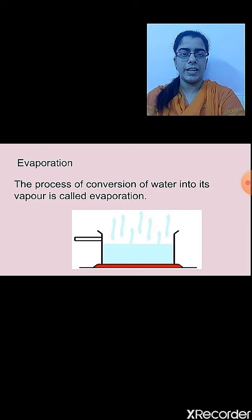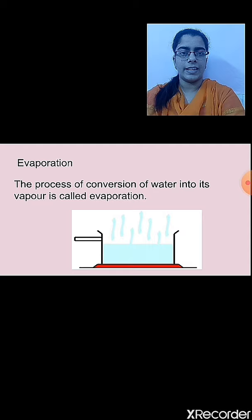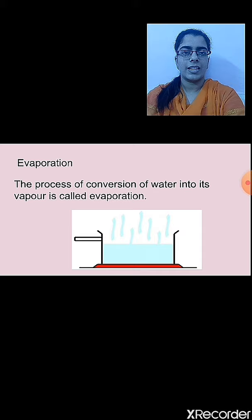We all know that we get salt from seawater, and this is due to the process of evaporation. The water is collected in a shallow pit, and under sunlight, the water gets heated up and turns into its vapor state. After a few days, the water completely evaporates, leaving behind the salt, which is then further purified. This process is known as evaporation.